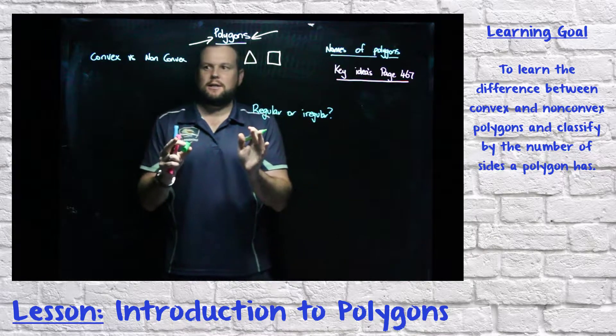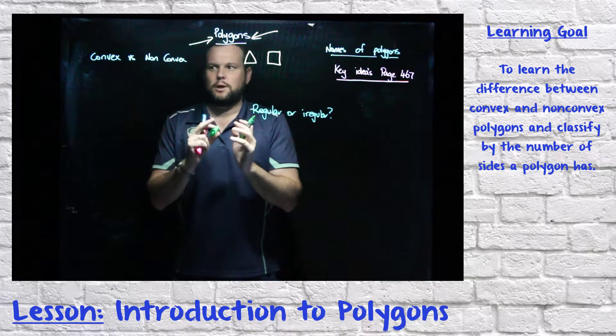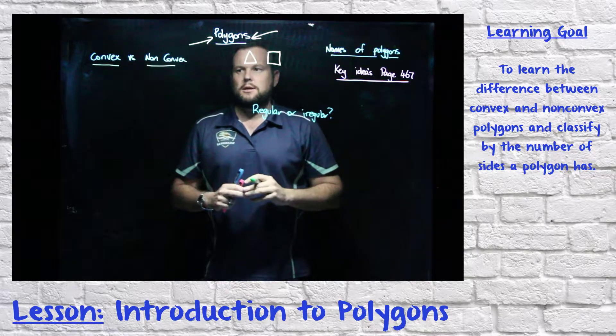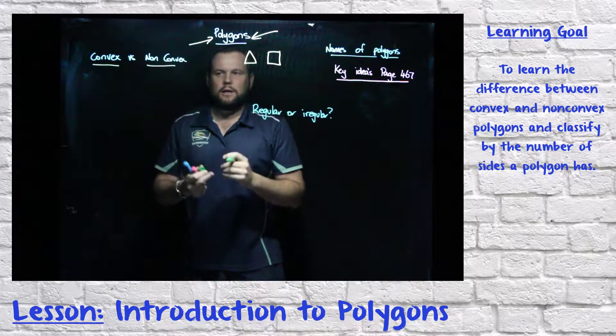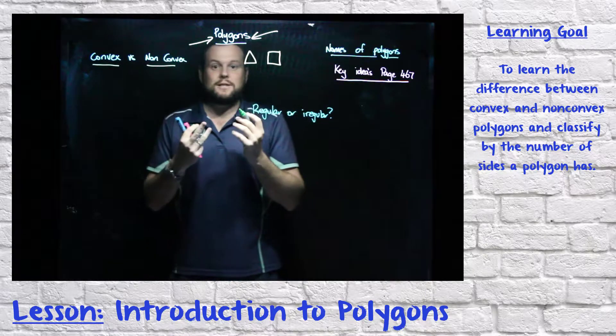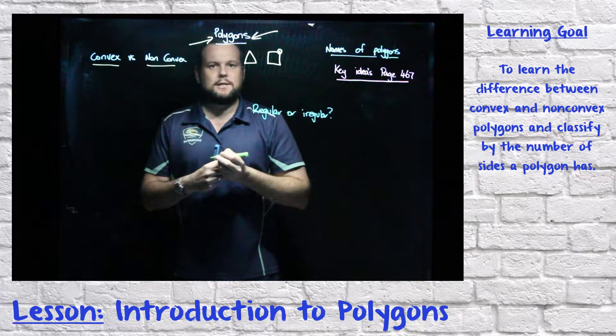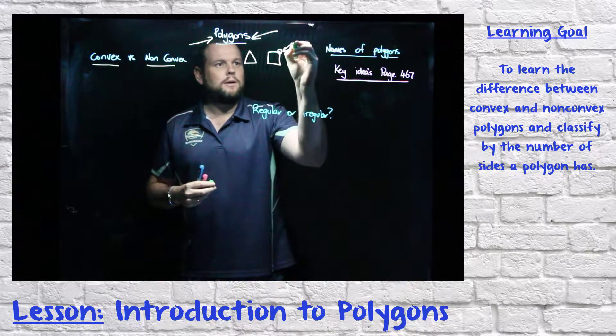Now there's a few things that you need to understand and a few terminologies that we're going to use. The first one is convex and non-convex. A convex polygon is a polygon that has all of its vertices. Now a vertice is where two sides meet.